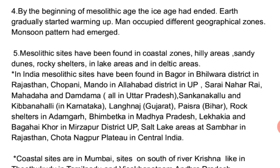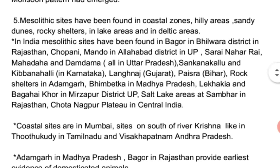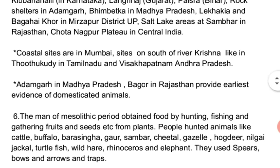Other Mesolithic sites include Sankanakallu and Kibbanahalli in Karnataka, Langhnaj in Gujarat, Besra in Bihar, rock shelters in Adamgarh and Bhimbetka in Madhya Pradesh, Lekhahia and Baghai Khor in Mirzapur district of Uttar Pradesh, the salt lake area in Sambhar in Rajasthan, Chhota Nagpur Plateau in central India, coastal sites in Mumbai, and sites south of river Krishna including Tuticorin in Tamil Nadu and Visakhapatnam in Andhra Pradesh.